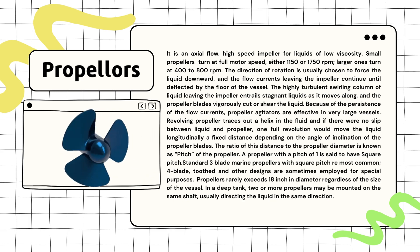Usually we find standard three-blade marine propellers with square pitches. Sometimes for special purposes, people use four-bladed propellers, toothed propellers, or other designs. Regardless of container size, propellers used this way are usually not larger than 18 inches in diameter. In really deep tanks, you might see two or more propellers on the same shaft.